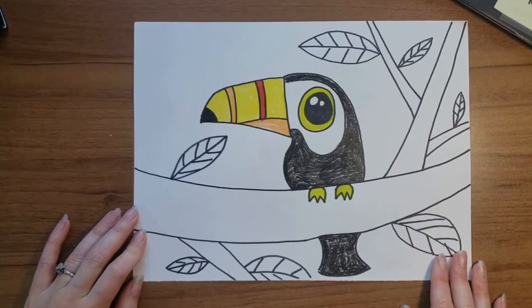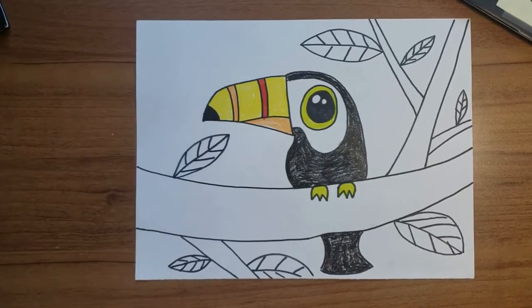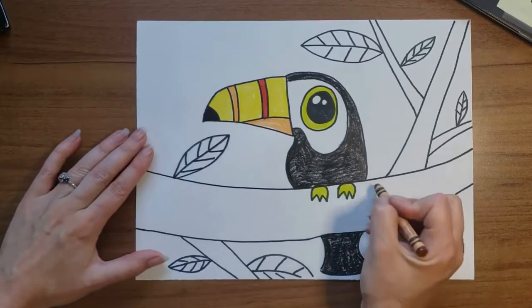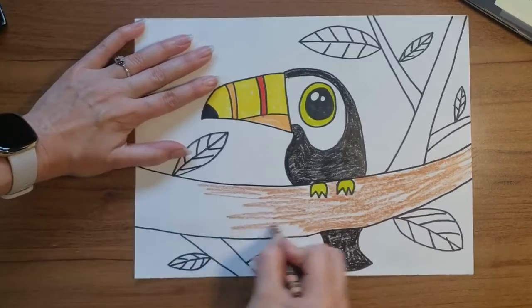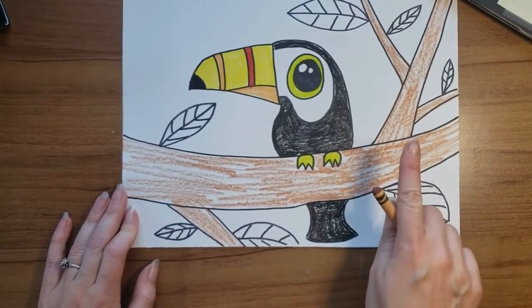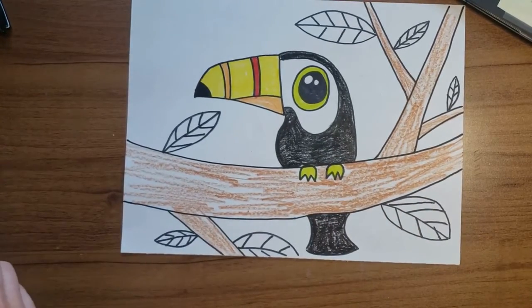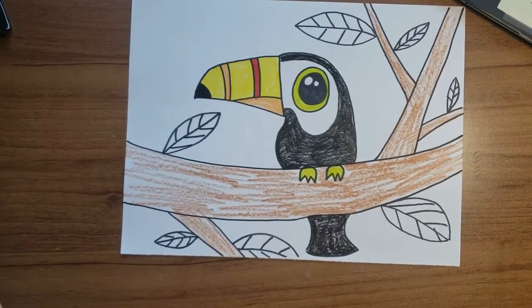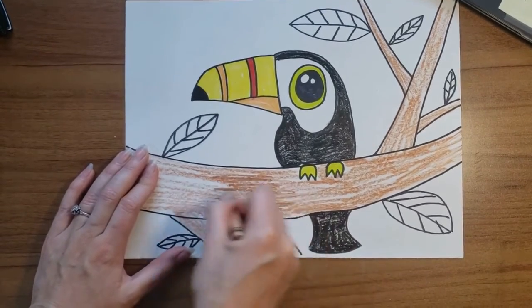The last thing we're going to do is color our tree and our leaves, so you can choose any colors you want for those. I think I'm just going to choose some regular tree and leaf colors, some brown and some green. Whenever I color branches I like to take one shade of brown and scribble the same direction as my branch, then take a different shade of brown and color the rest of it in, trying to get those spots that I might have missed before. You can take a darker shade so that you can tell the difference.